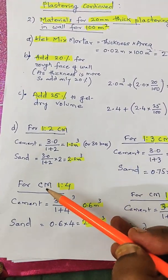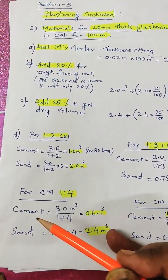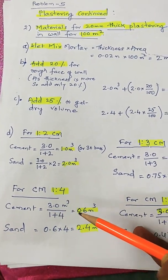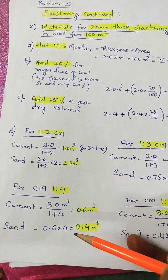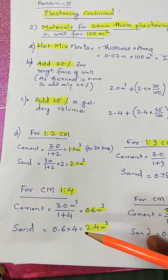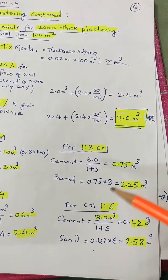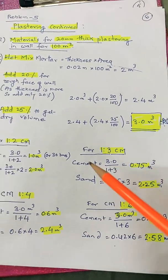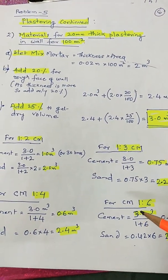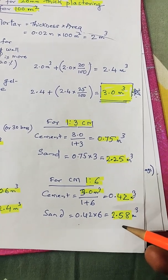For cement mortar 1:4, cement is 3 cubic meters divided by (1 + 4), which equals 0.6 cubic meters. Sand is 4 times the cement, giving 2.4 cubic meters. Similarly, you can calculate for CM 1:6. You can observe that for higher ratios, the cement will be less and the sand will be more.